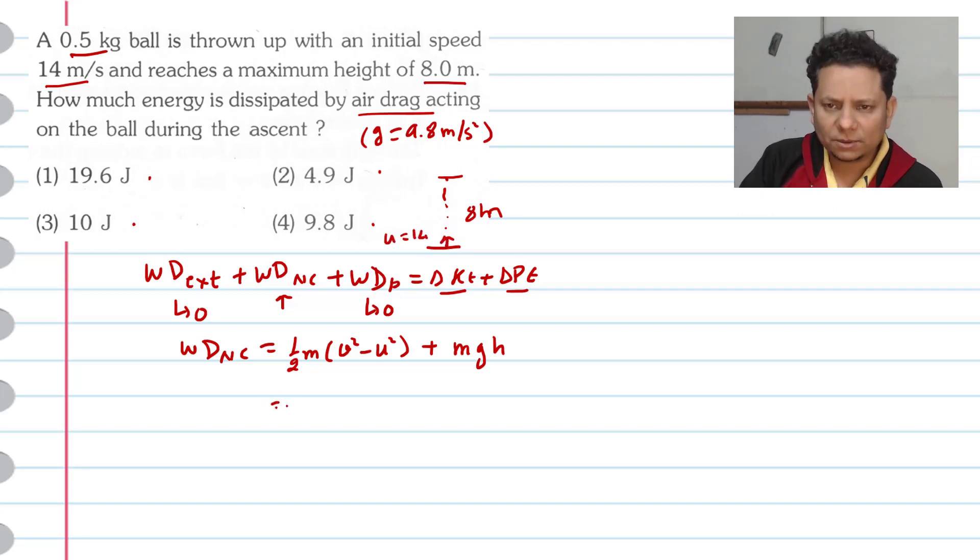Based on that we can say this equals half, m is 0.5 - let's write 0.5 as 1 by 2. And this is v², final velocity v is 0, minus initial velocity 14 squared, plus m - m is again half - multiplied by g value 9.8, multiplied by h which is 8. So the value will be - this becomes 1 by 4 below, and 14 squared. If we cancel the 2, this is 7 into 7, that is 49.